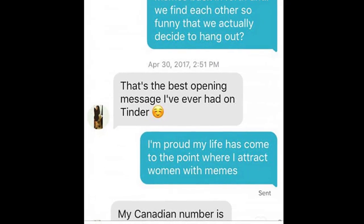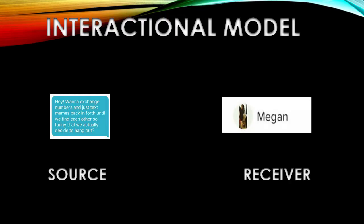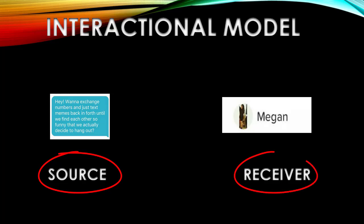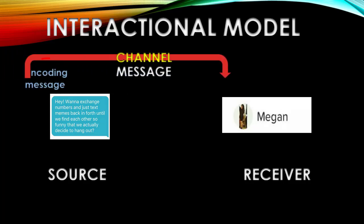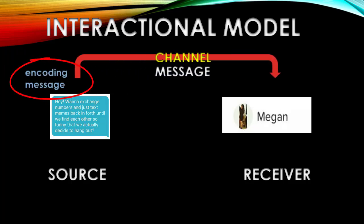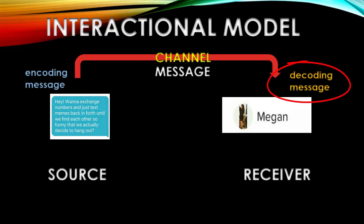So how can we explain how this works through the interactional model? We have a source of communication and a receiver of communication. Our hero texts the opening pickup line, which is the encoding of a message, and that message gets sent through a particular channel. In this case, the channel is SMS text communication. Megan receives the text, decodes the message, tries to determine what it means, and then has a response.